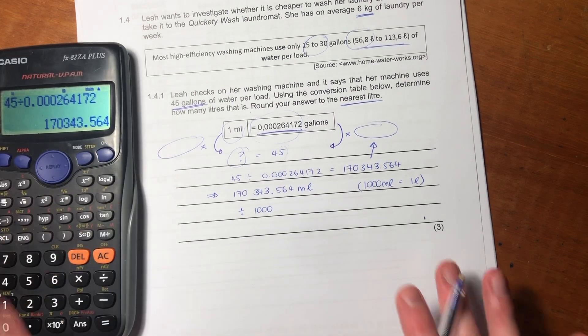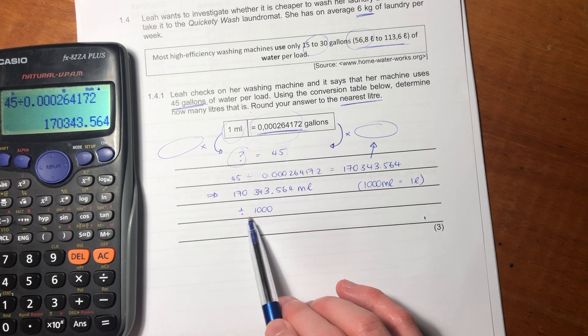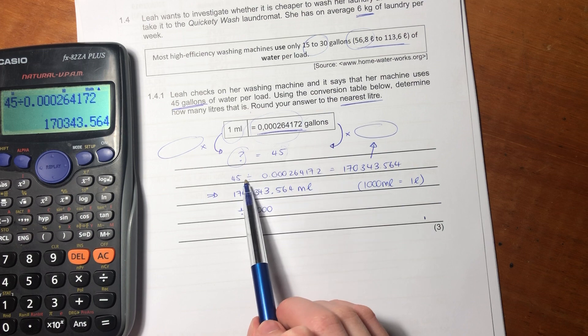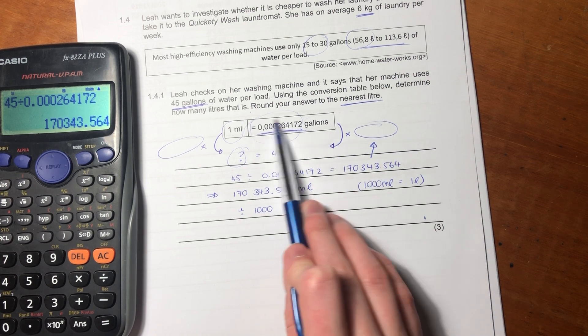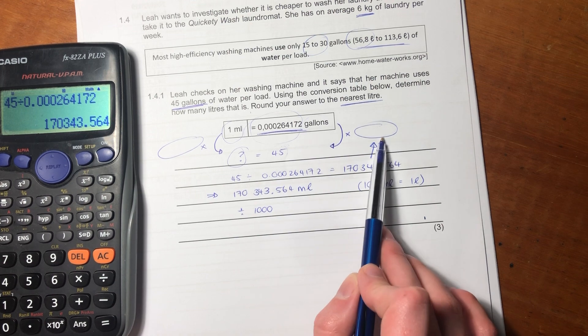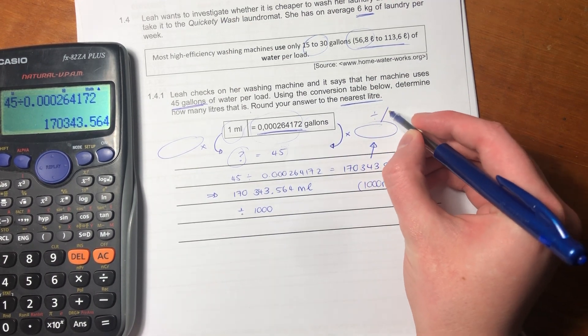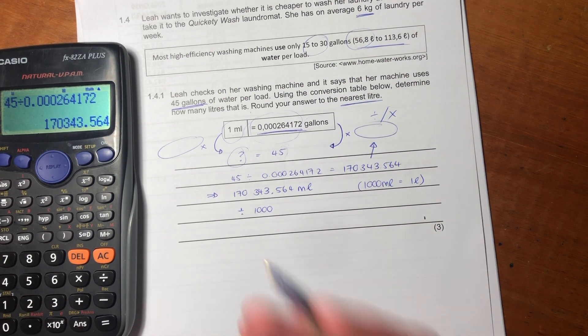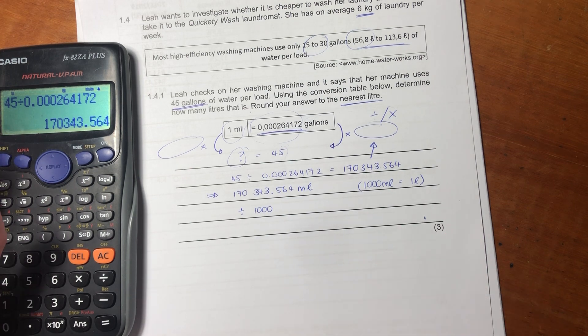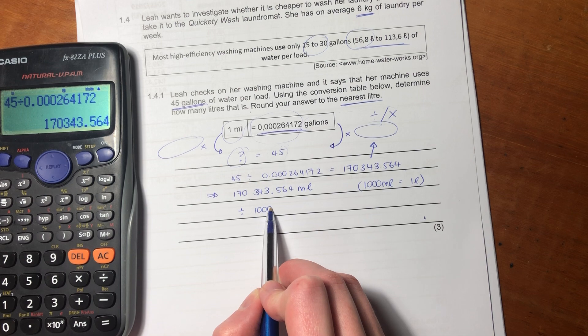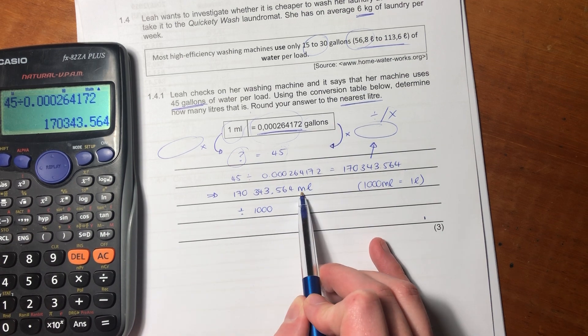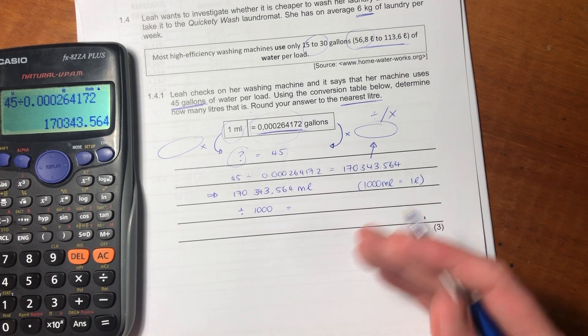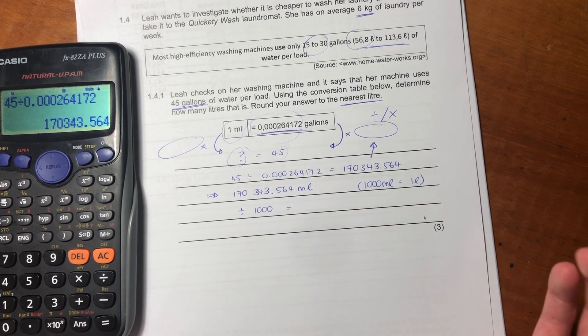We also know that a thousand milliliters equals one liter, so to convert this into liters, we have to divide it by a thousand. Sometimes what causes confusion with students is they don't know when to divide or when to multiply. Always remember that divide and times are opposites, so we use them interchangeably because we need them to find different things within ratios. We're dividing by a thousand because we're moving from a small measure to a larger measure, so we're expecting there to be fewer liters than milliliters.